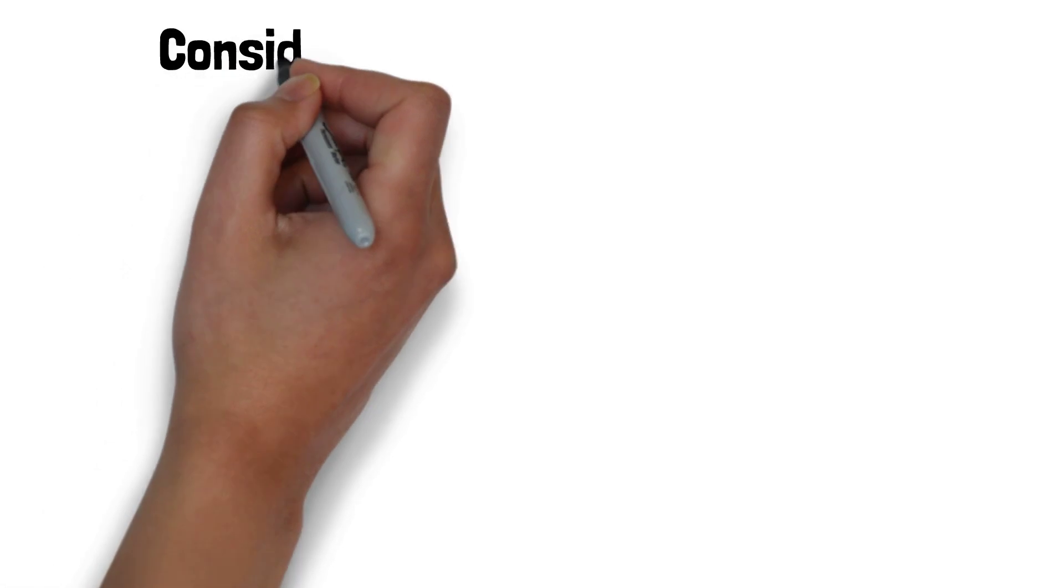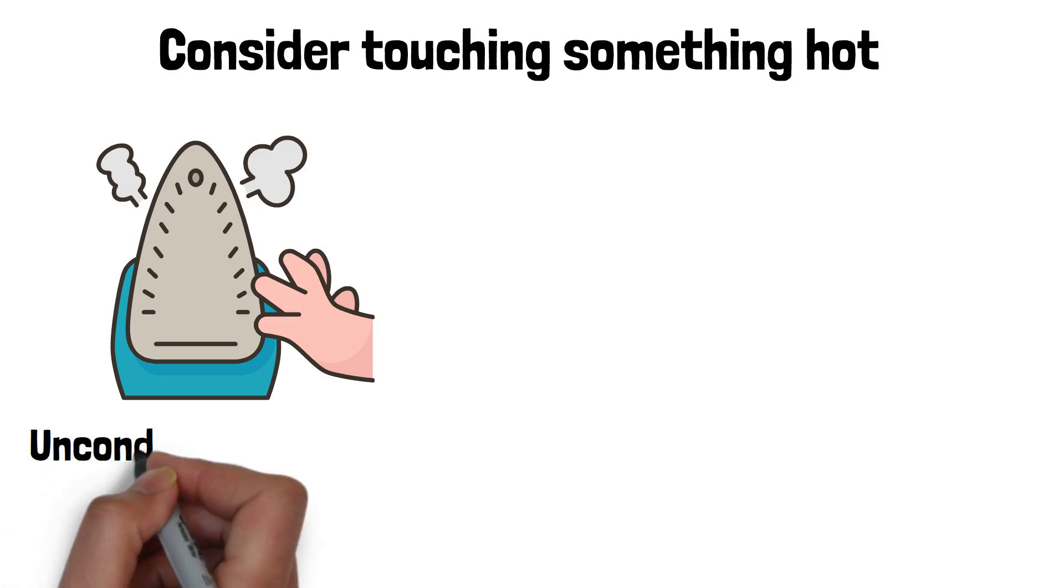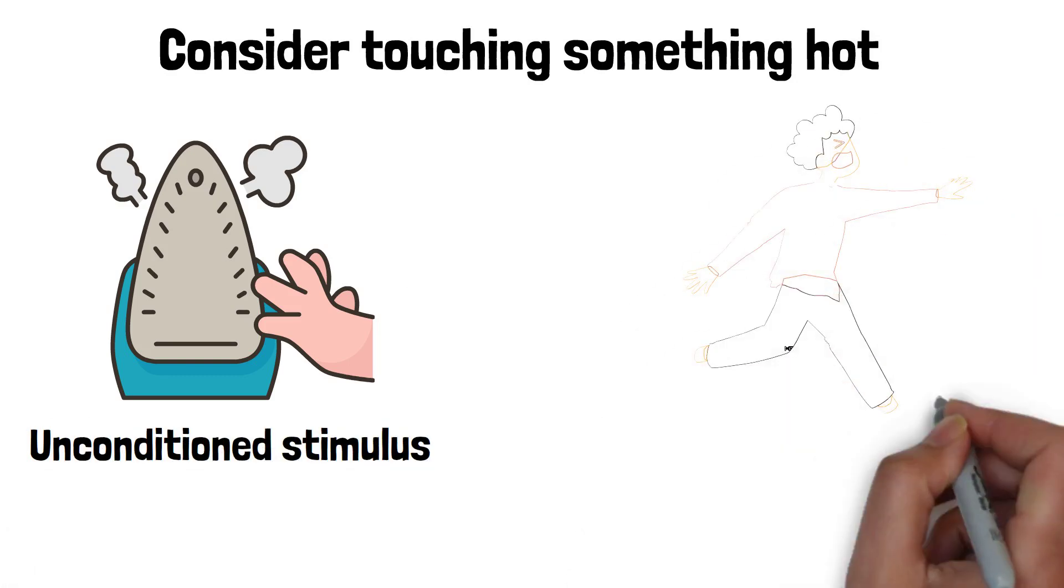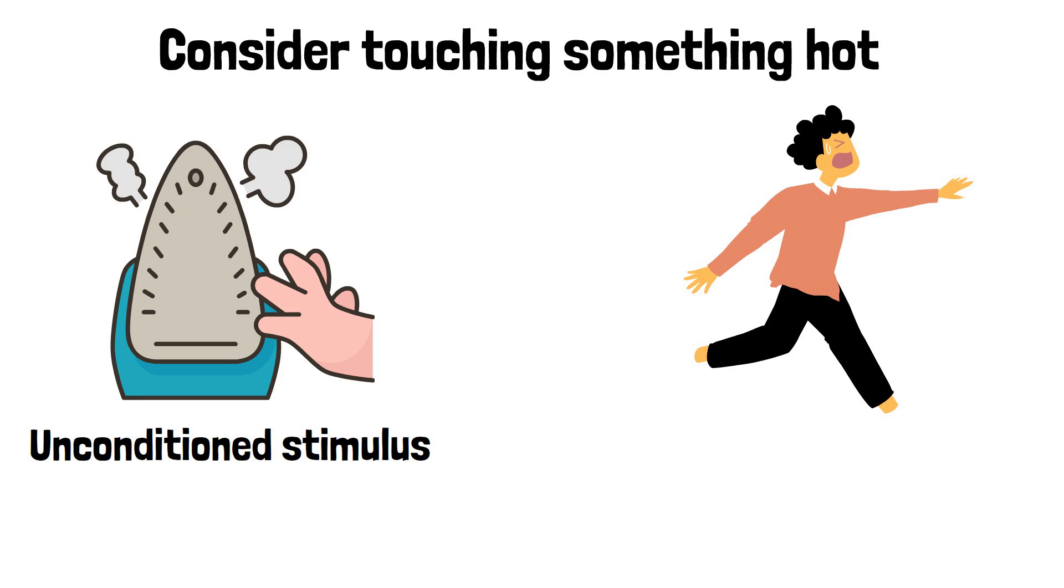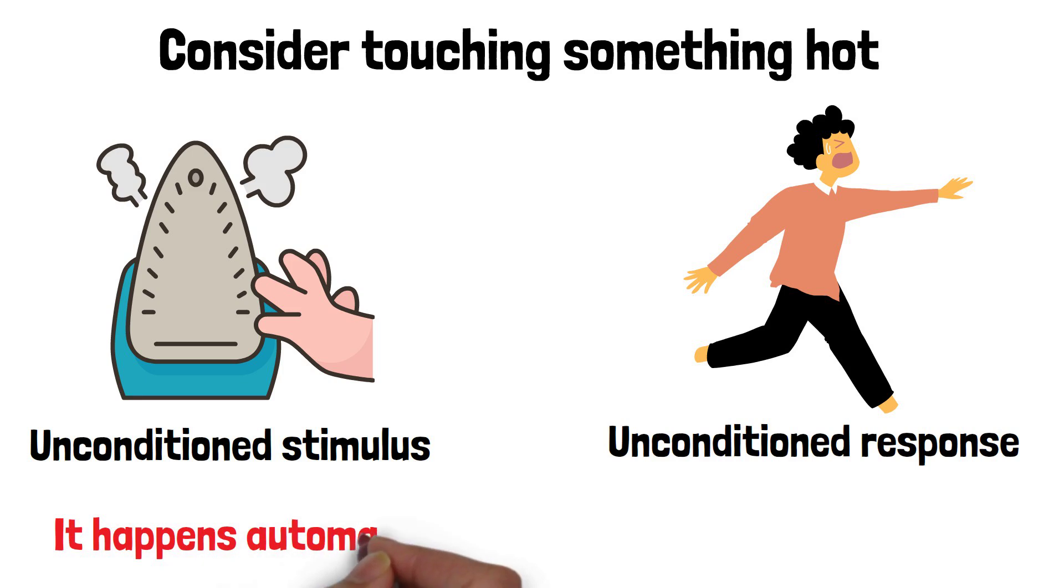Finally, consider touching something hot. This is a painful stimulus and acts as an unconditioned stimulus because it naturally makes us pull our hand away quickly. This quick pulling away is an unconditioned response because it happens automatically without us having to learn it.